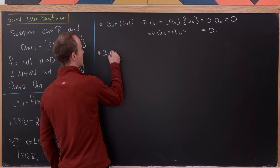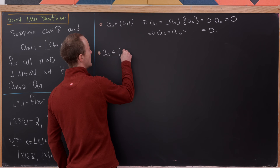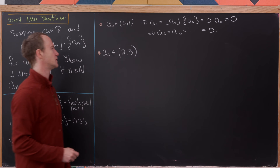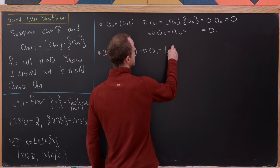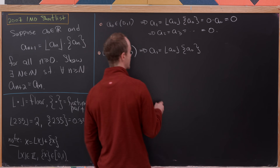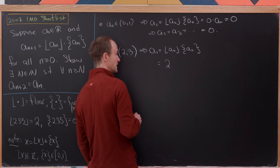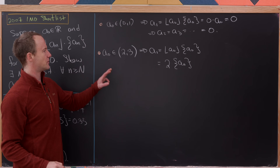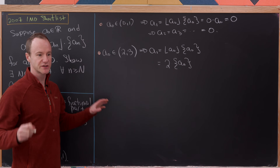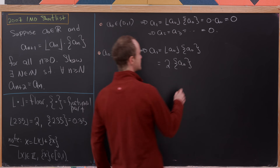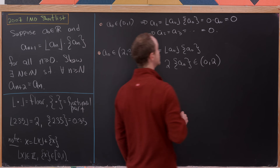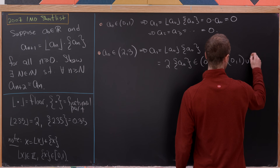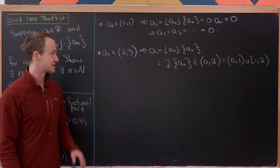Now let's look at the case when a₀ is in the interval (2, 3). Then a₁ equals floor(a₀) times frac(a₀), which is 2 times frac(a₀). Since the fractional part is between 0 and 1 (and not 0 since a₀ is not an integer), this lands in the interval (0, 2), which we can decompose as (0, 1) ∪ (1, 2).